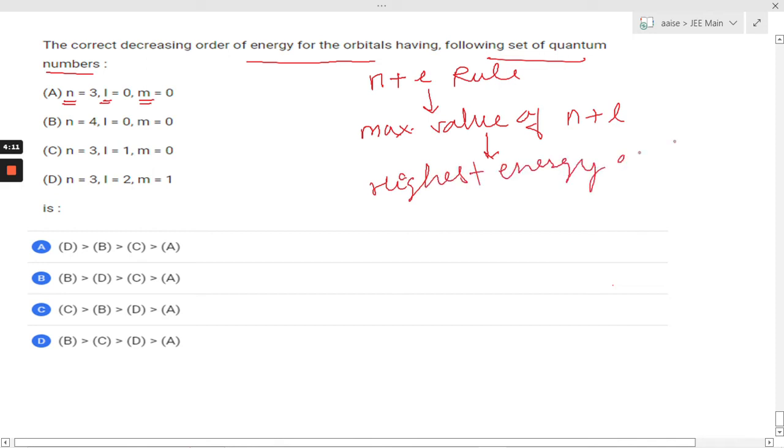So let us see how we are going to do it. So for A, n plus l is equals to 3. For B, we are having n plus l is equals to 4. And for C, n plus l is equals to 4. And for D, it is n plus l is equals to 5.